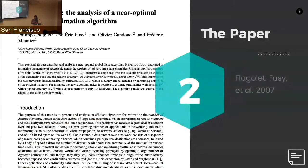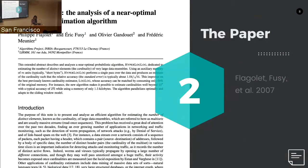The HyperLogLog paper builds on previous work by the authors to propose a fairly efficient data structure for estimating cardinality. This paper is 10 years old this year, so it seemed like a good time to revisit it. The main author, Flajolet, also passed away a couple of years ago, so it's a commemoration of his work. A quick overview of the efficiency-accuracy trade-off: if you have n-max possible values, this takes about log log of n-max space — thus the name of the algorithm — with error inversely proportional to the square root of space taken.